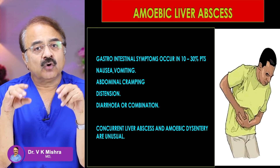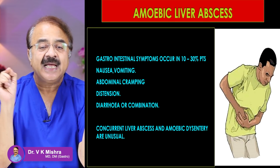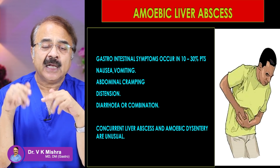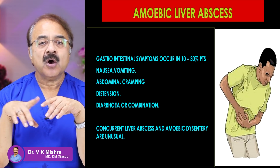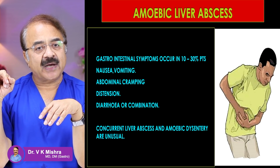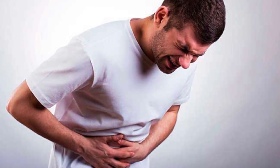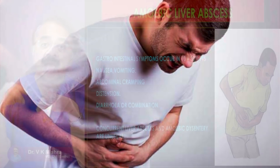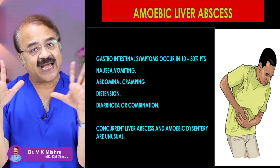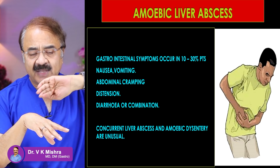Amoeba actually reaches the liver through the intestine. So in about 10 to 30% of patients, gastrointestinal tract symptoms also appear — nausea, vomiting, crampy abdominal pain, and sometimes loose motion or diarrhea. However, it is uncommon to have both amoebic liver abscess and amoebic dysentery simultaneously; intestinal symptoms appear in 10 to 30% of amoebic liver abscess patients.